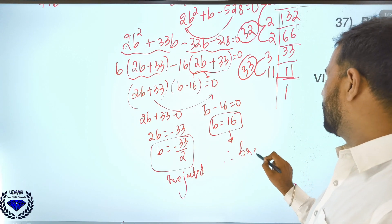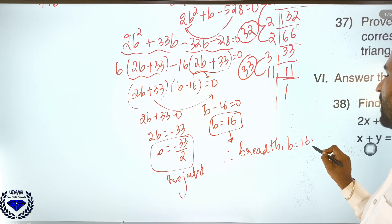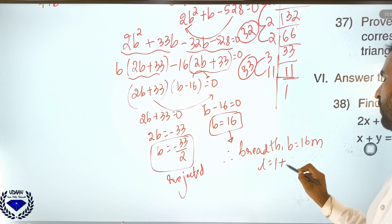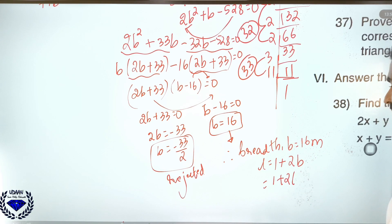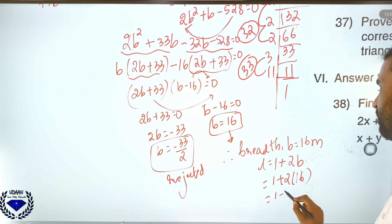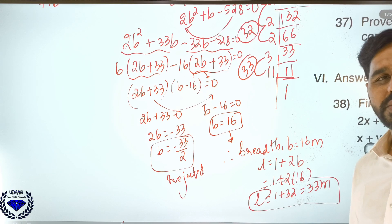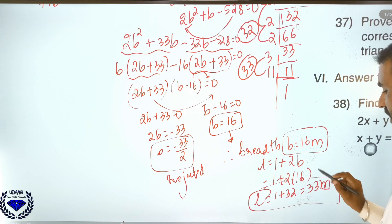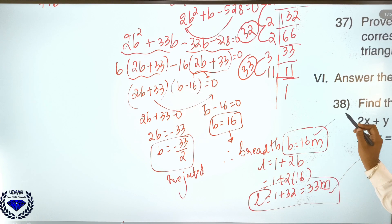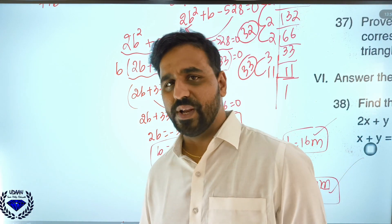Therefore breadth B = 16 metres. Length = 1 + 2 × 16 = 33 metres. So the length is 33 metres and the breadth is 16 metres.